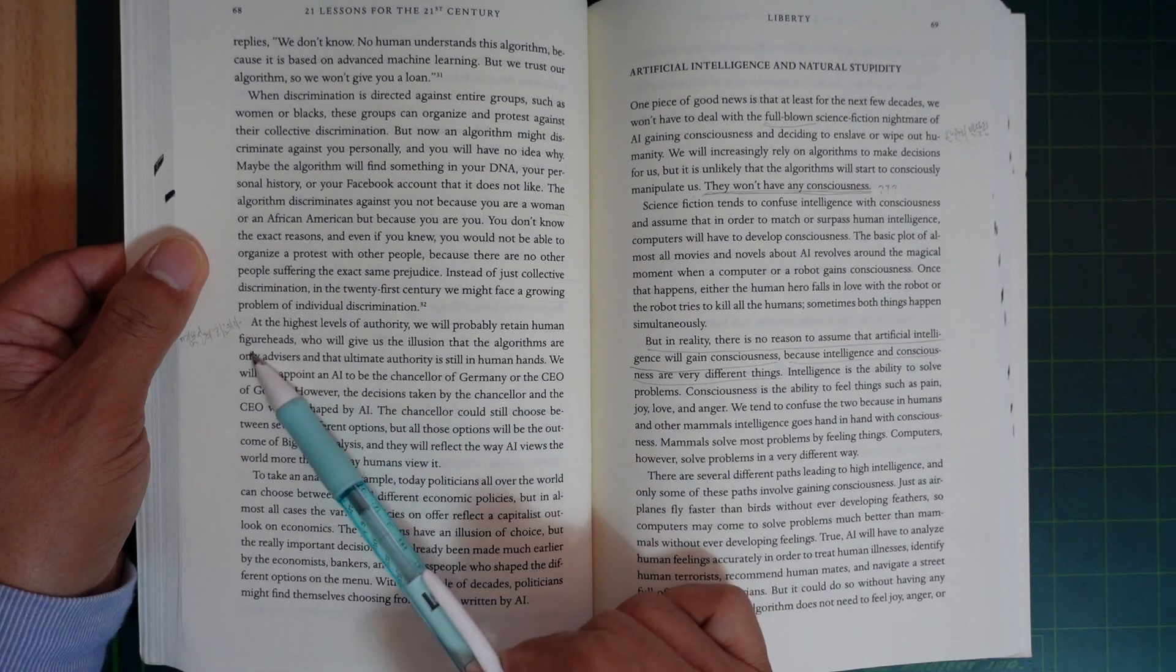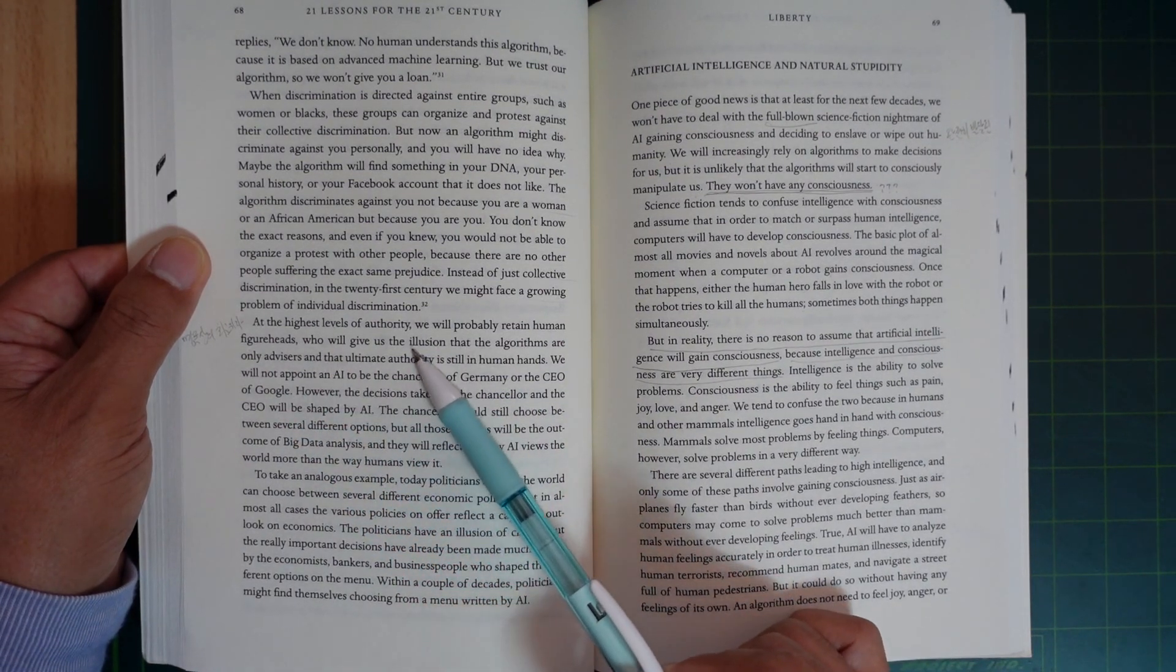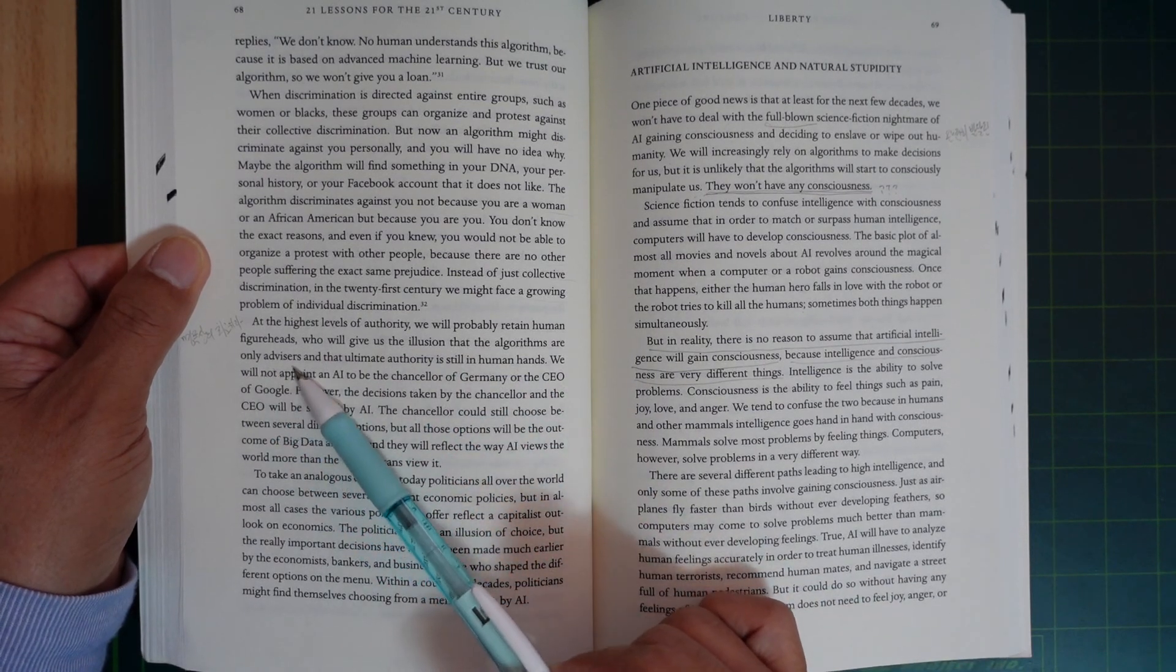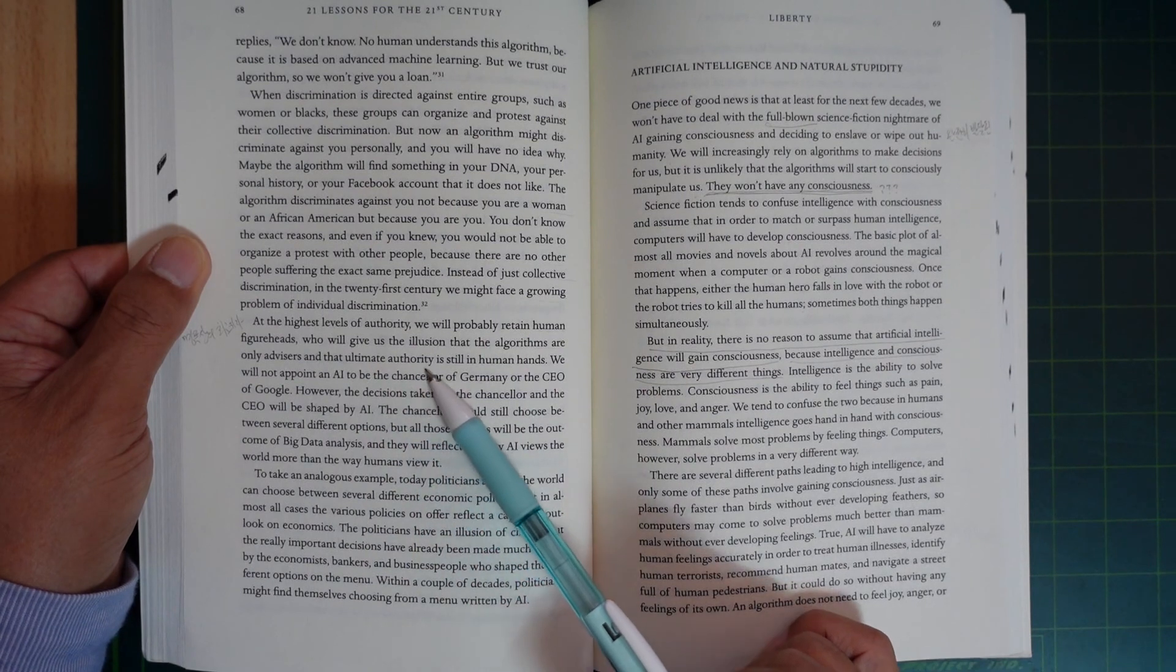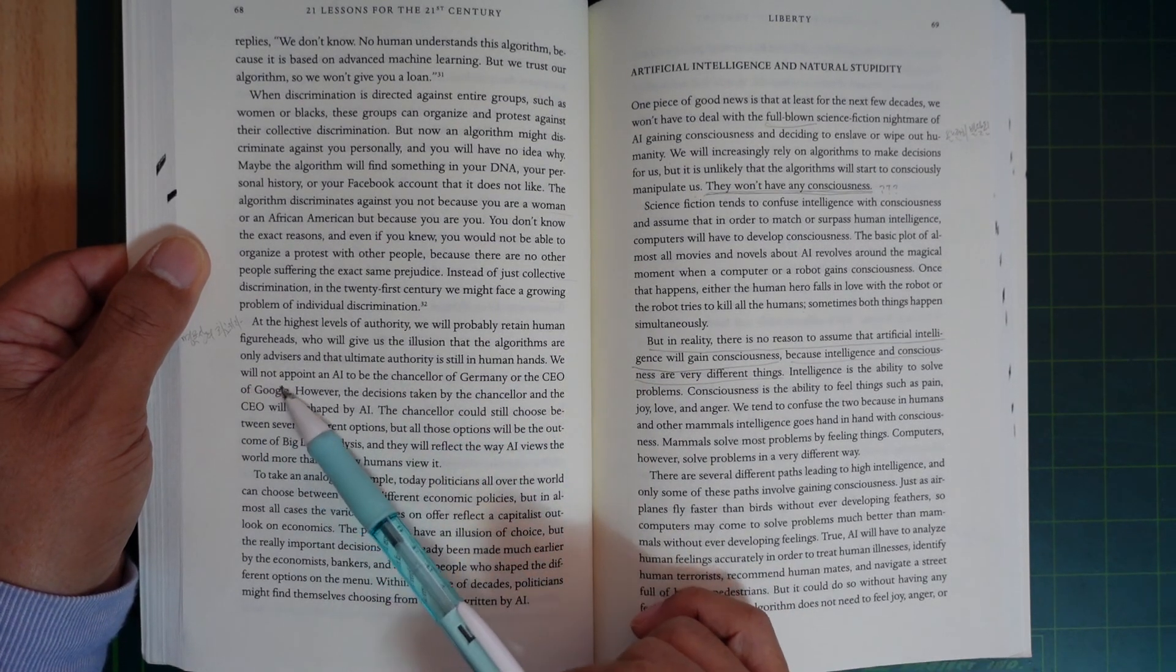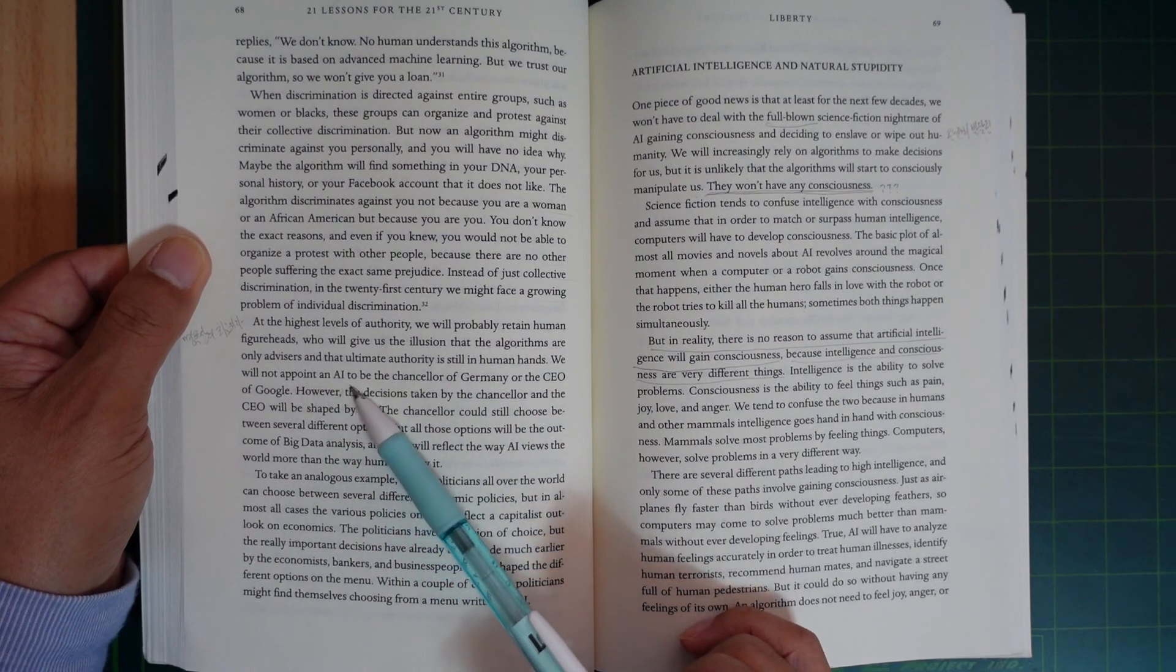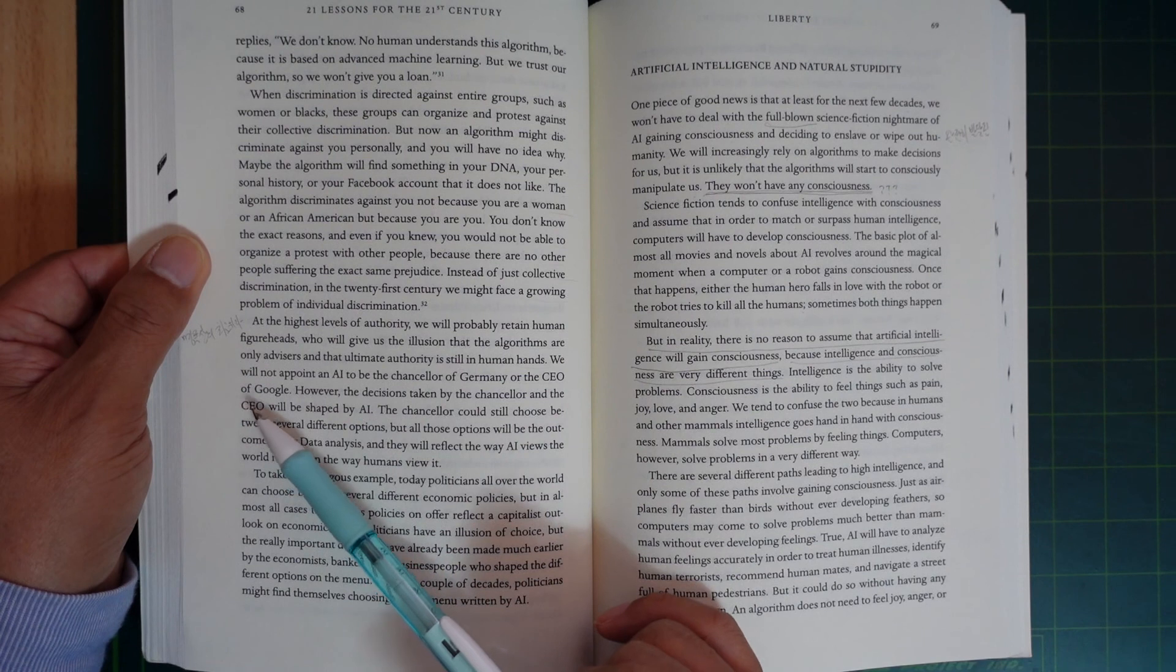At the highest level of authority, we will probably retain human figureheads who will give us the illusion that algorithms are only advisors and that ultimate authority is still in human hands. We will not appoint an AI to be the Chancellor of Germany or the CEO of Google.